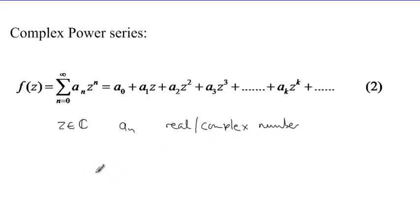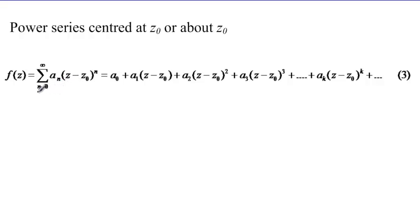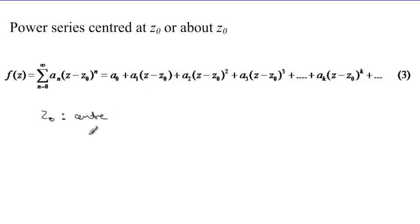We can also have the same type of series expressed in the following manner: a summation of a_n multiplied by (z minus z_0) to the power n. Here z_0 defines what you can call the center of development of the power series — we say this power series is centered or developed around z_0. The coefficients here again are complex or real numbers.